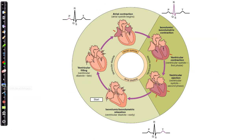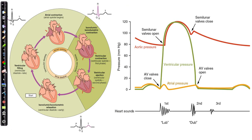Now let's take a look at it in graphic form — the Wiggers Diagram. We're looking at three different lines: the red line is pressure in the aorta, the green line is pressure in the ventricle, and the yellow line is pressure in the atria. Starting with atrial contraction, when the atria contract and squeeze, the atrial pressure goes up — we see a small blip. There's also a slight blip in ventricular pressure as we pack the ventricles full of blood.